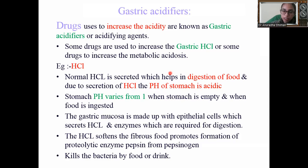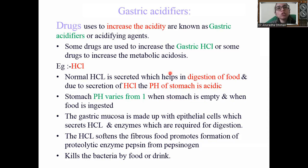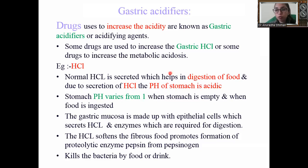HCl is normally secreted during food digestion, which makes the pH of the stomach acidic. For example, older people often advise drinking water before a meal because it helps lower the pH. We need a stable acidic pH for the digestion of food. Stomach pH can vary from one when the stomach is empty. The gastric mucosa, made up of epithelial cells, secretes hydrochloric acid and enzymes required for digestion.